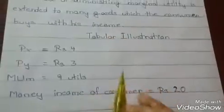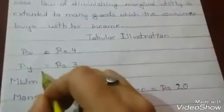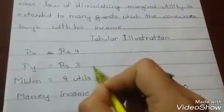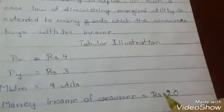In such a case, the law of diminishing marginal utility is extended to many goods which the consumer buys with his income. Now let us see the tabular illustration. PX is equal to rupees 4, PY is equal to rupees 3, MUM is equal to 9 utils, and money income of consumer is rupees 20.